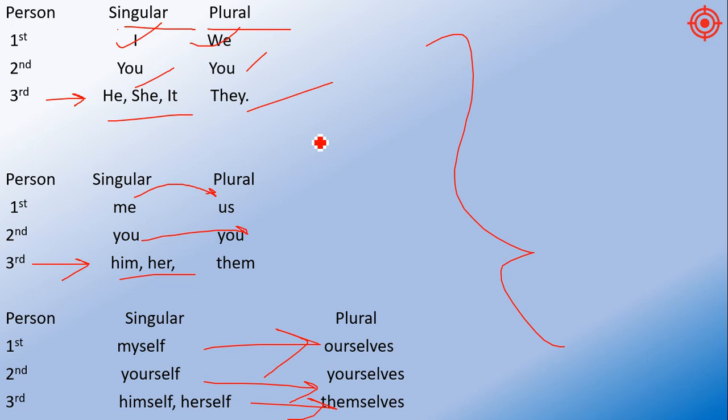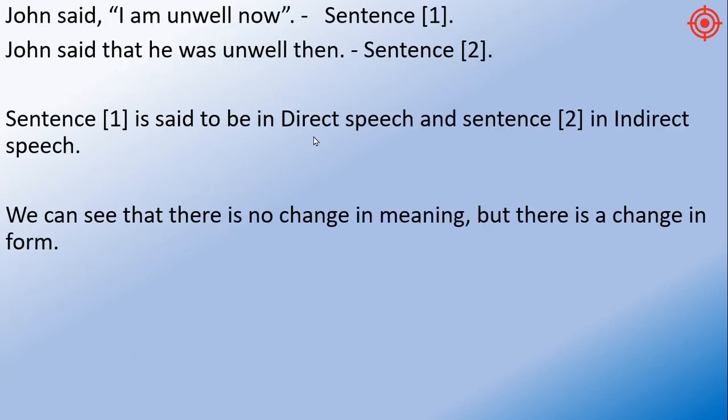You should know all this. Now we will take one sentence: John said, 'I am unwell now.' So this is sentence one. John said that he was unwell then. This is sentence two.